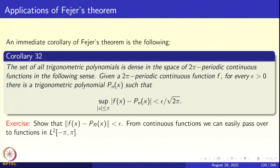A trigonometric polynomial is a finite linear combination of 1, cos x, sin x, cos 2x, sin 2x, …, cos nx, sin nx. You take this system of functions and form finite linear combinations — those are the trigonometric polynomials. Fejér's theorem says there exists an n₀ such that for n > n₀ the arithmetic mean (1/n)(S_0 + S_1 + ⋯ + S_n) satisfies |f(x) − arithmetic mean| < ε uniformly.